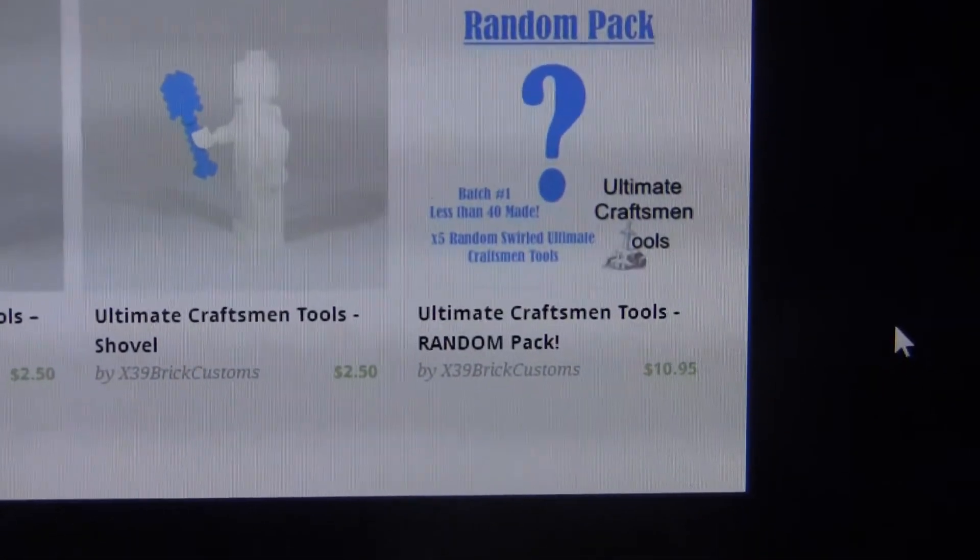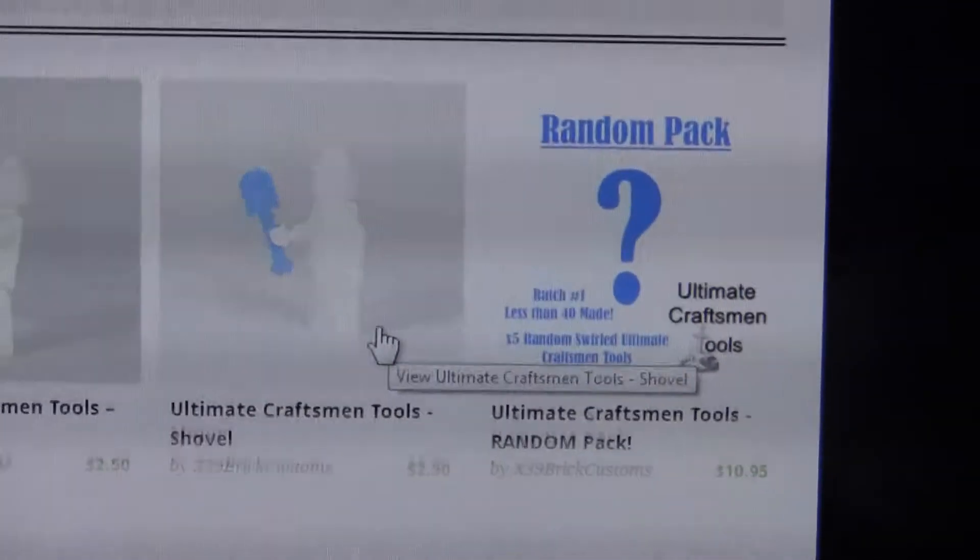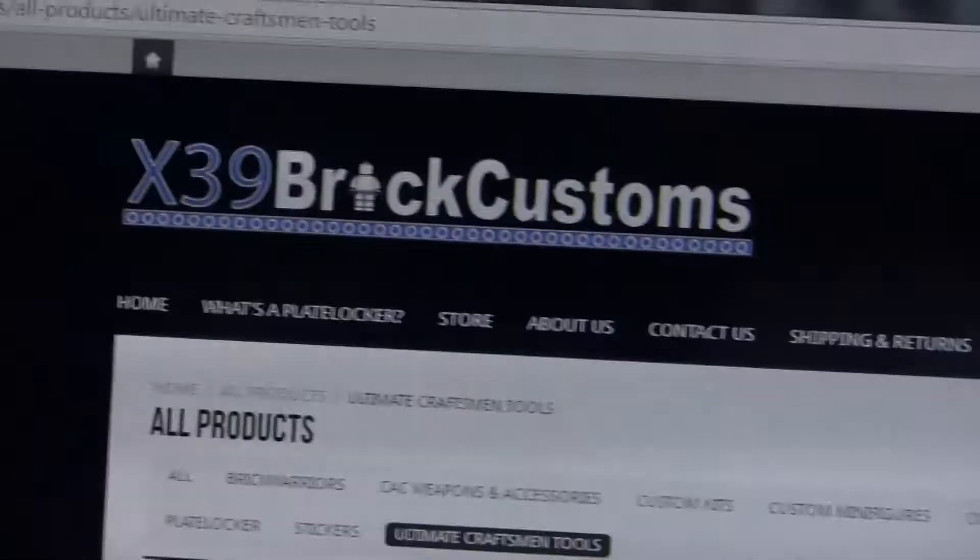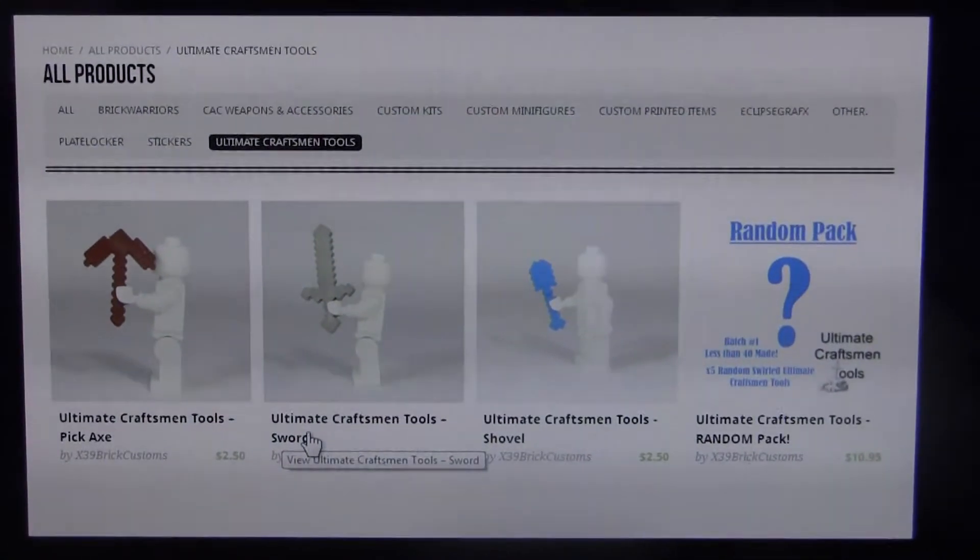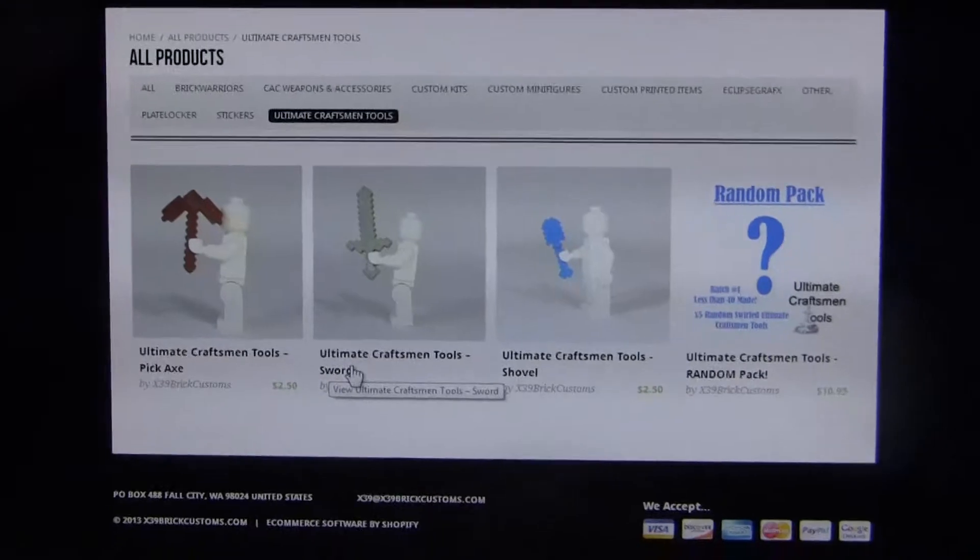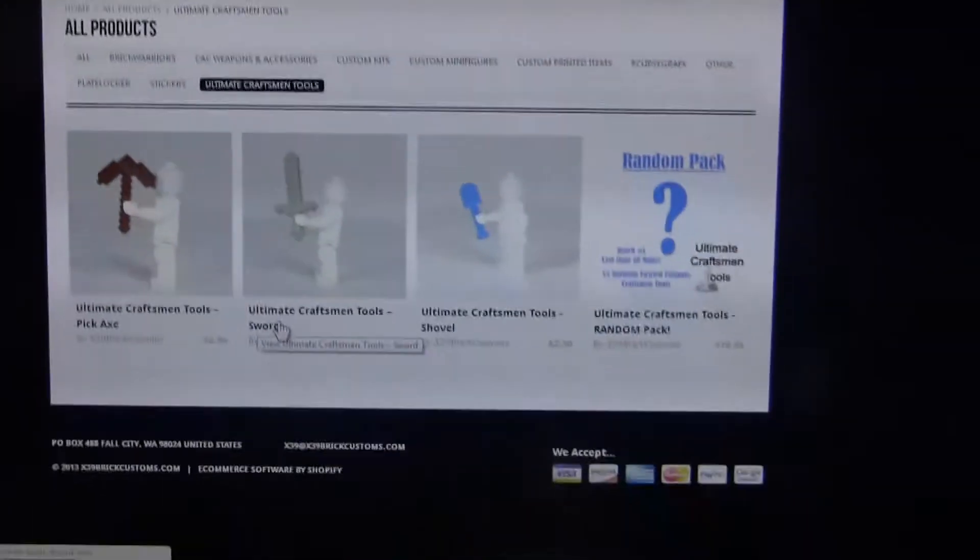You have the random pack. It's now $10.95 as you can see, and this is before I've done the price drop. Basically, I'm gonna give you a discount code and it only applies to Ultimate Craftsman Tools.